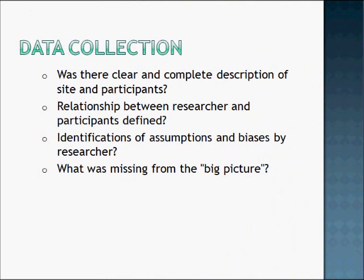The study should give you an idea of the key characteristics of the people involved. In data collection, descriptive clarity questions whether there are clear and complete descriptions, and procedural rigor describes the data gathering process. You want to make sure there are clear and complete descriptions of the site and participants, that any kind of relationship is identified, that you can identify any assumptions and biases of the researcher, and see if anything was missing from the big picture.